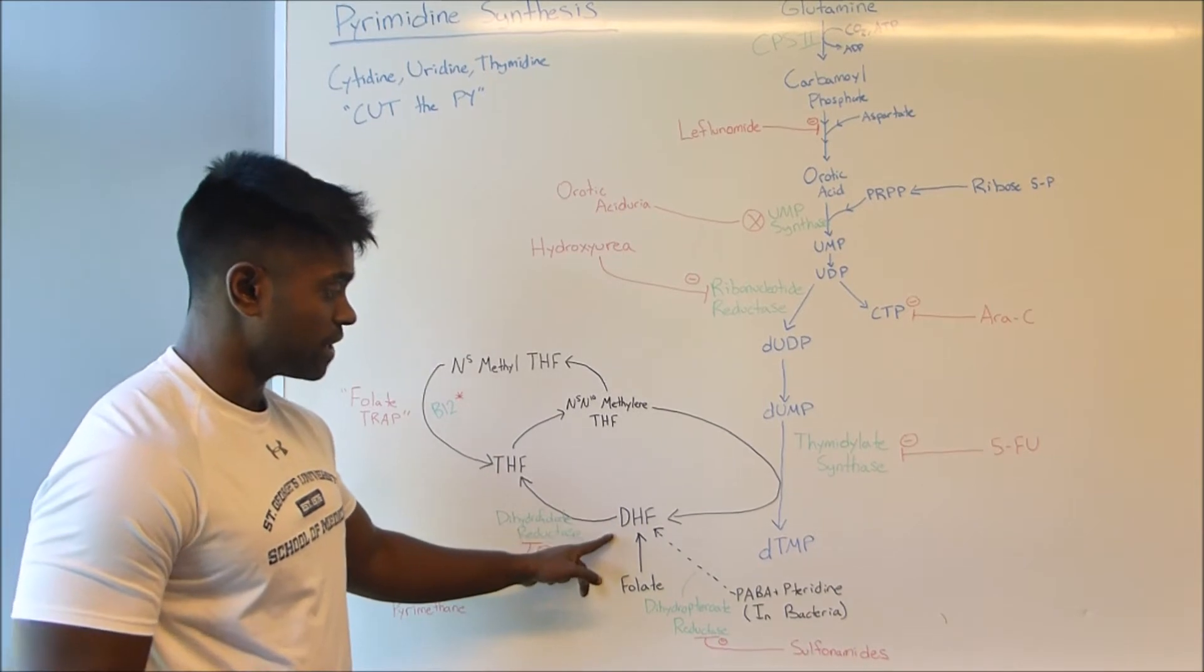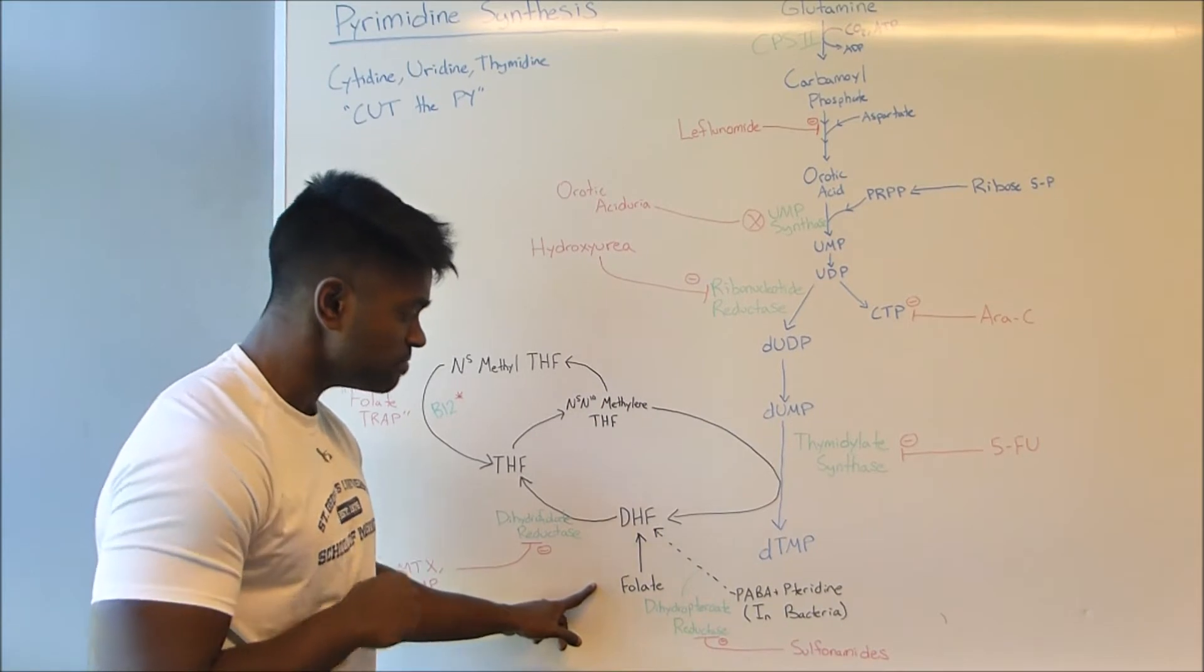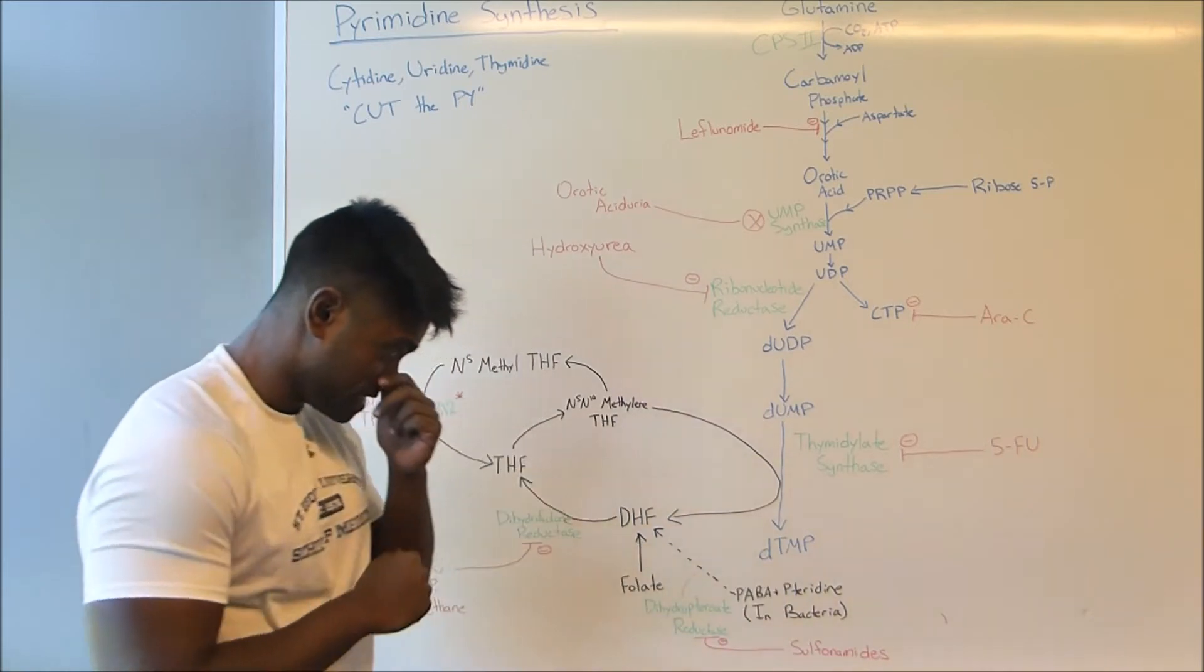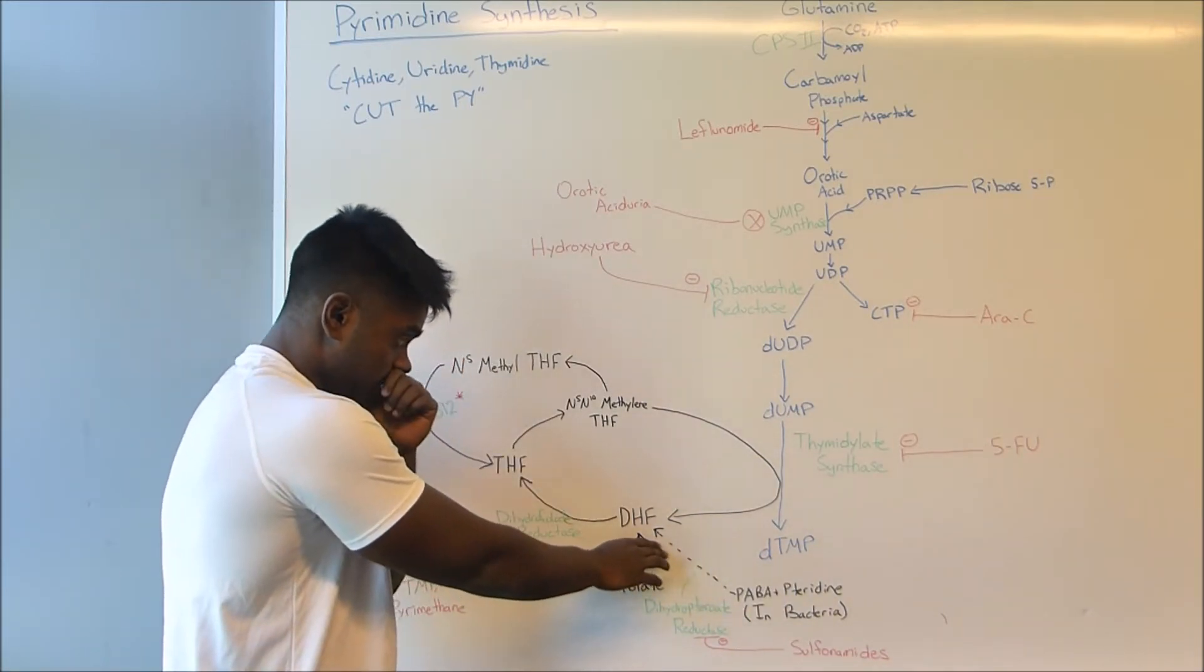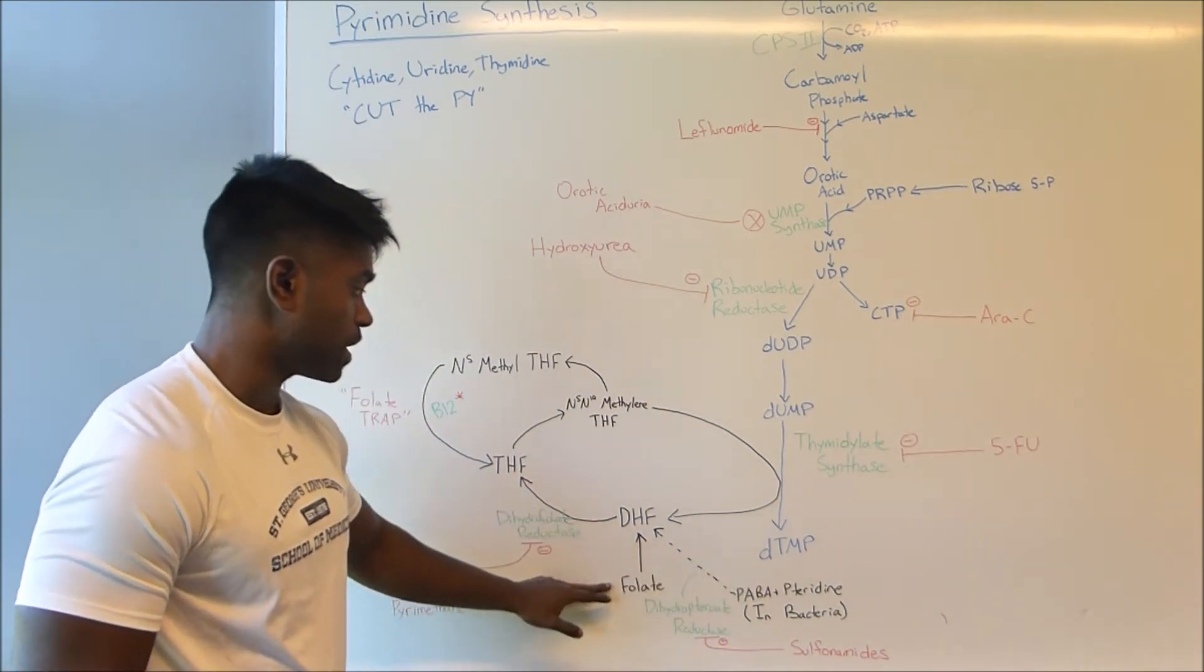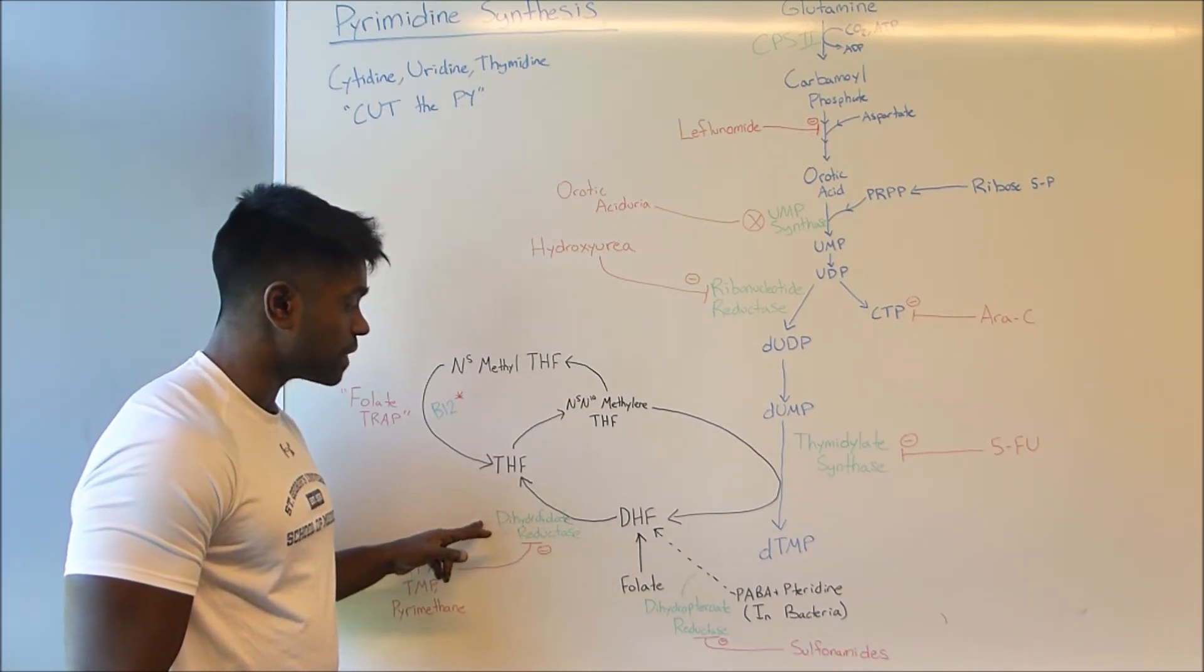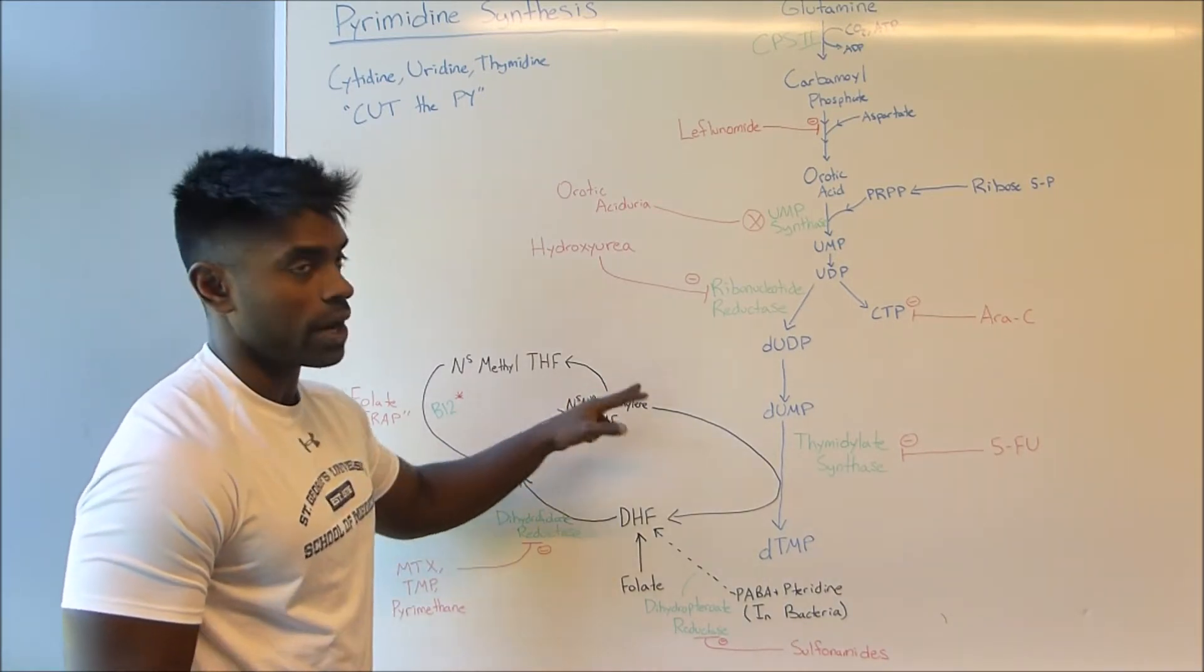So in order to have this molecule we need to have folate producing DHF. And in bacteria where they do not have dietary folate, this is done using a molecule called PABA and pteridine. This is only in bacteria. And then from this molecule they're going to convert into DHF. So bacteria uses PABA where we're going to use folate. Then this DHF is later going to be converted to THF using the enzyme dihydrofolate reductase. And then this THF can later then be converted into the molecule that we need.